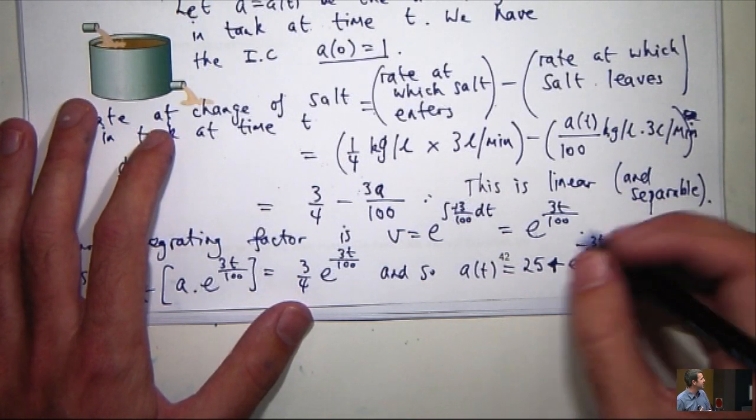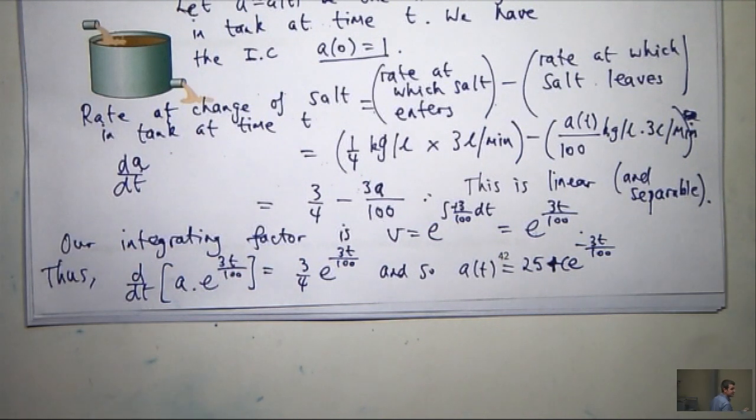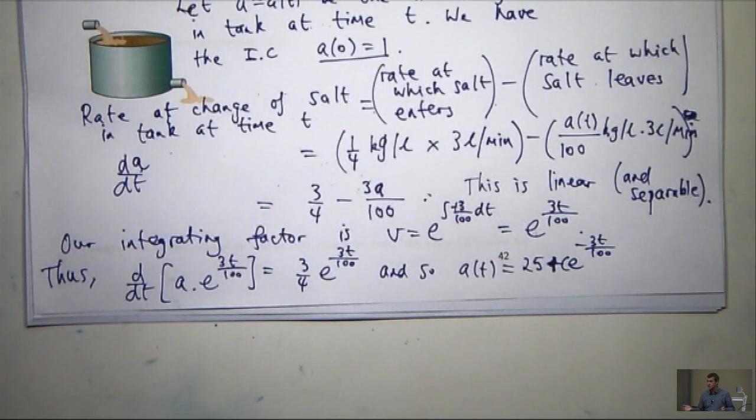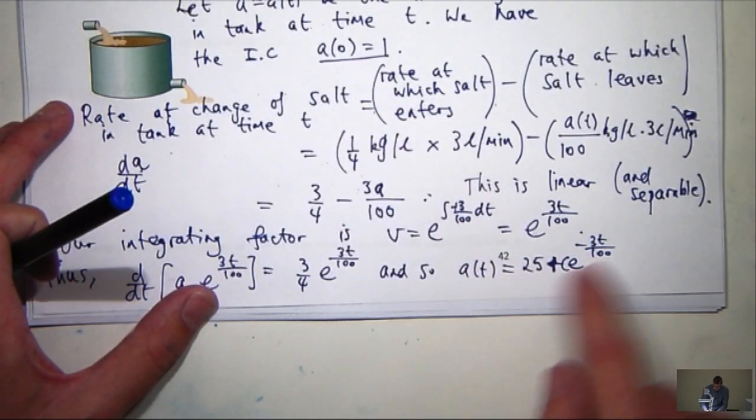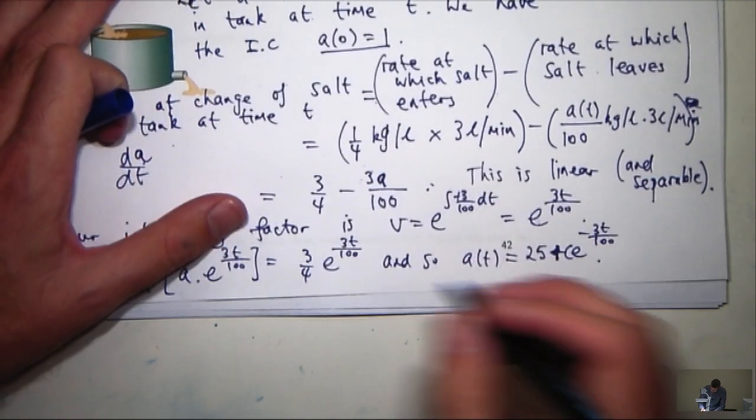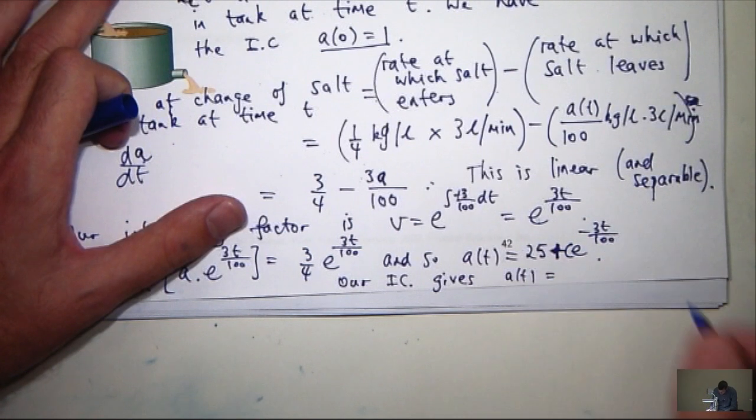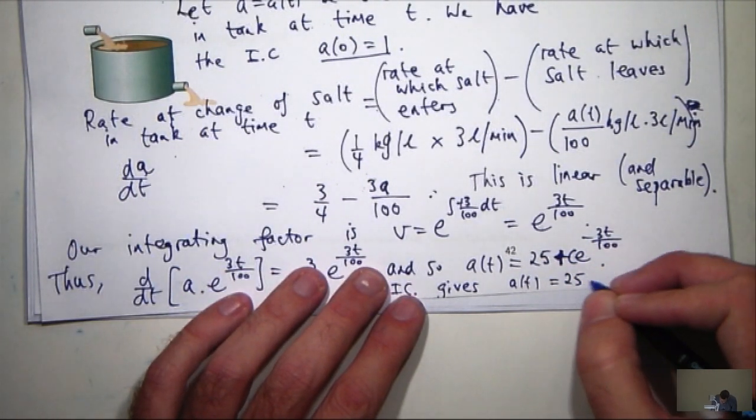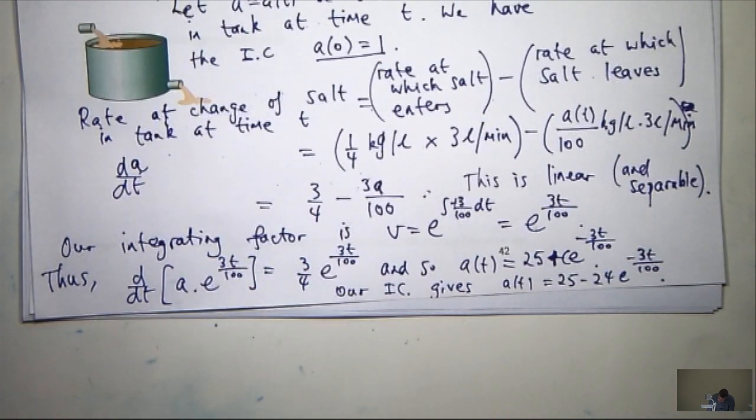So my general solution is going to be something like this plus C. The C here is an integration constant. Alright, there's one thing I haven't used yet though. Can anyone tell me the one thing I haven't used? Yes, right, the initial condition. I want to find that C. So I've got to use this now. So I go back here, put in t equals 0, set the whole thing equal to 1 and then rearrange to find C. You get C equals minus 24.